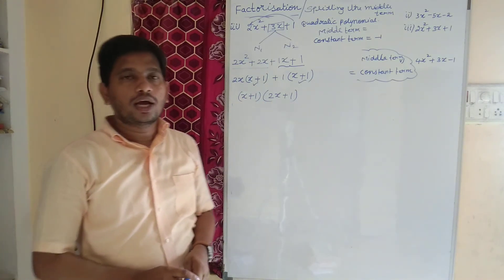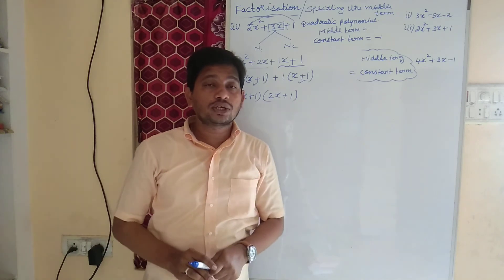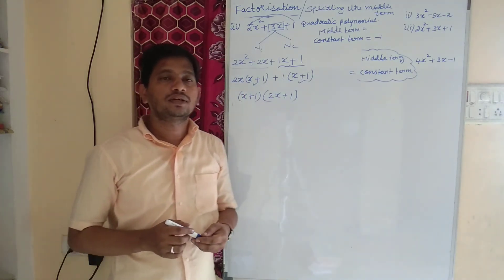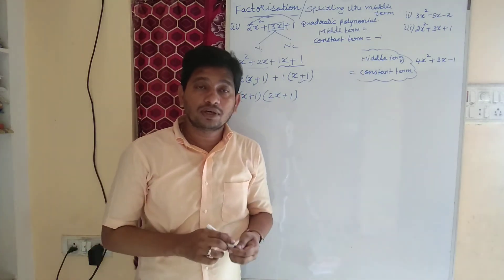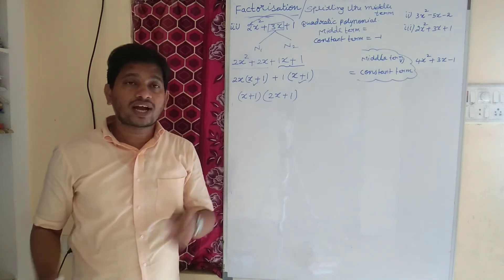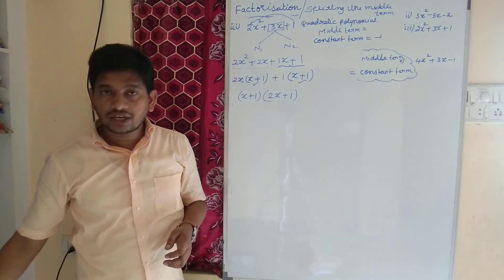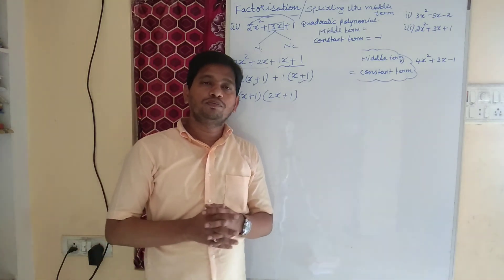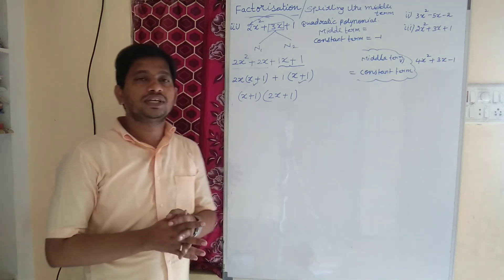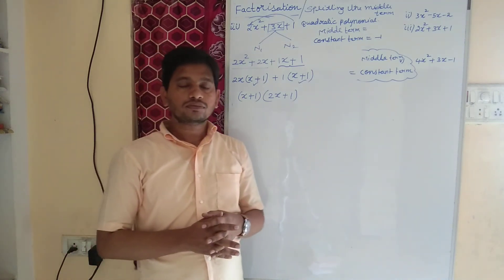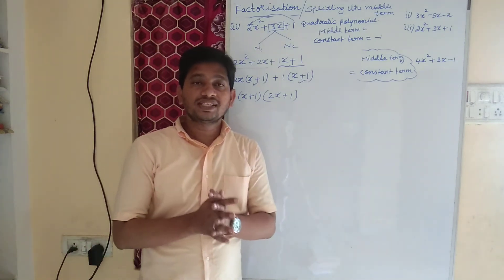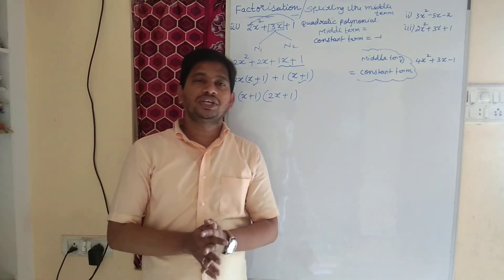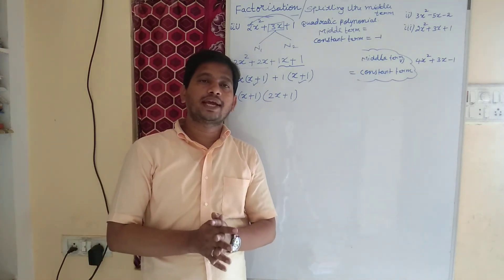I hope this concept — when the coefficient of x square is some number other than 1, how to factorize the given quadratic polynomial — is very clear to you. Please hit the subscribe button, like it and share it. Thank you.